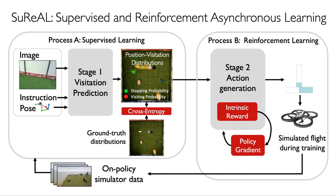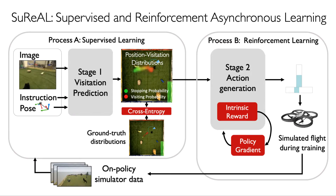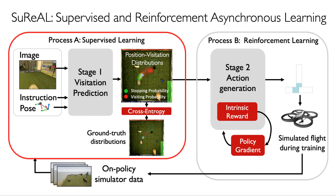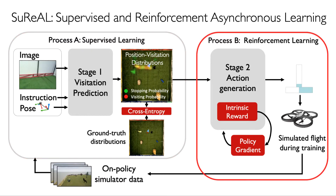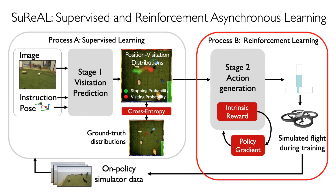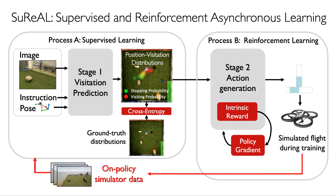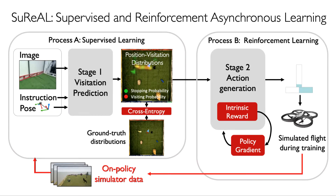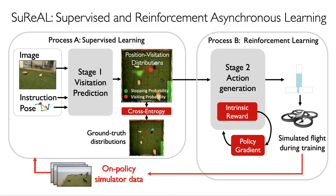We introduce a training algorithm called SURREAL — Supervised and Reinforcement-Asynchronous Learning. It trains the two model stages simultaneously but in two concurrent processes. Stage 1 is trained with supervised learning in process A to predict where to fly. Stage 2 is trained with on-policy reinforcement learning in process B to generate actions. Policy rollouts generated in process B during reinforcement learning are added to the dataset used for supervised learning in process A. As a result, Stage 1 adapts to the state distribution induced by the entire policy, allowing it to learn error-recovery behaviors as demonstrated earlier.